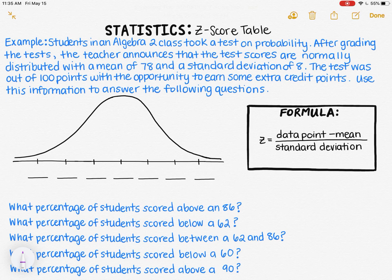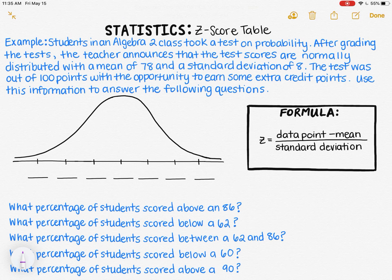In this video, we're going to talk more about Z-scores, and I'm going to show you how to use a special table that will help you find out more information about data that is normally distributed. In this example, students in an Algebra 2 class took a test on probability. After grading the test, the teacher announces that the test scores are normally distributed with a mean of 78 and a standard deviation of 8. The test was out of 100 points with the opportunity to earn some extra credit points.